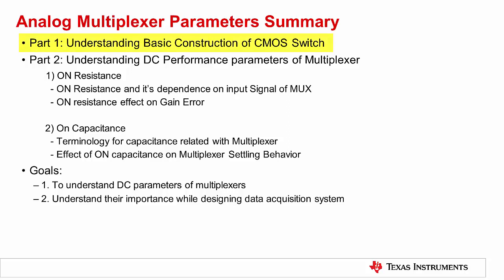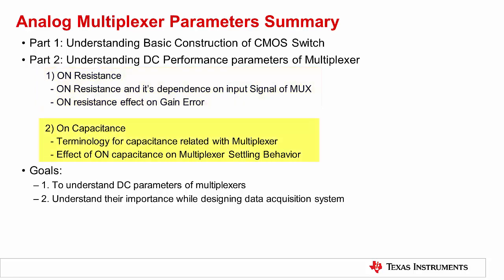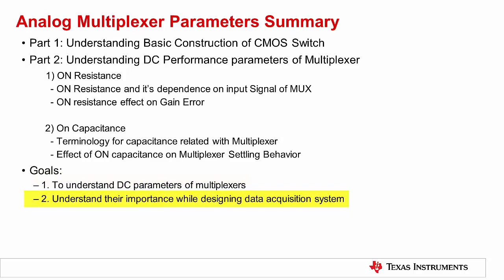In this video, we will first have a short discussion on the basic construction of a CMOS switch. Next, we will discuss ON resistance and ON capacitance. Specifically, we will see how ON resistance can cause gain error and non-linearity, as well as how ON capacitance can affect settling behavior of multiplexers. The main goal of this presentation is to highlight the DC parameters of multiplexers and to understand how they impact performance of a data acquisition system.